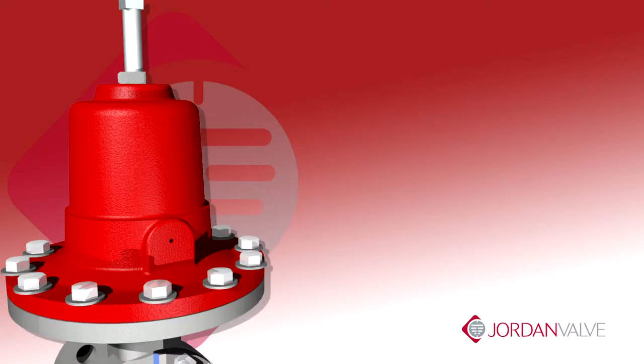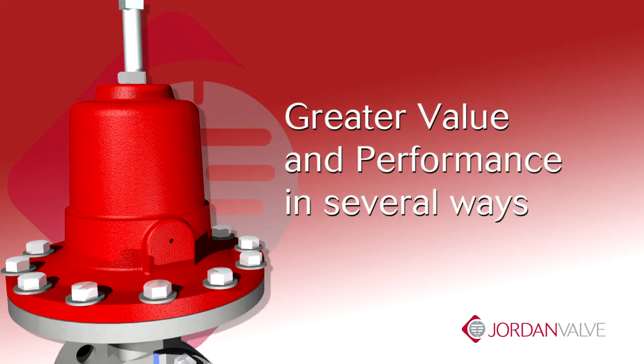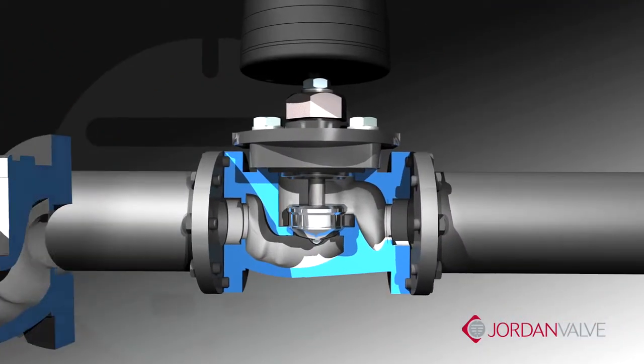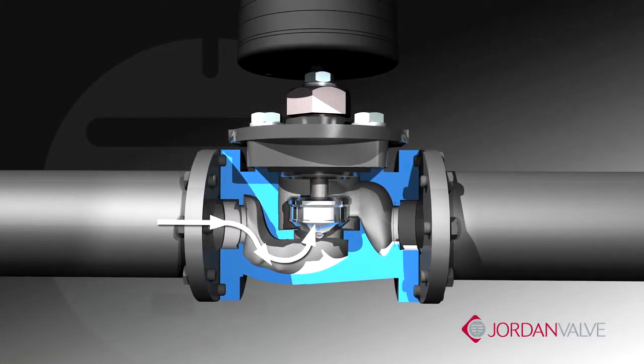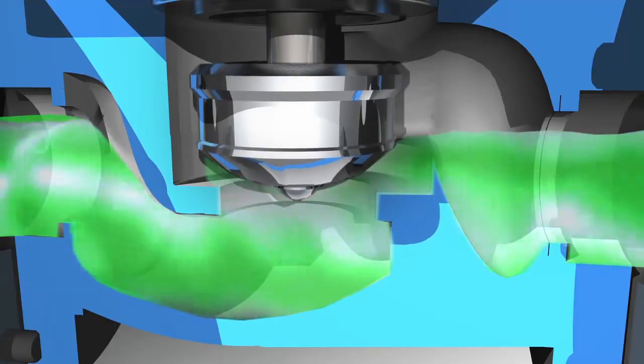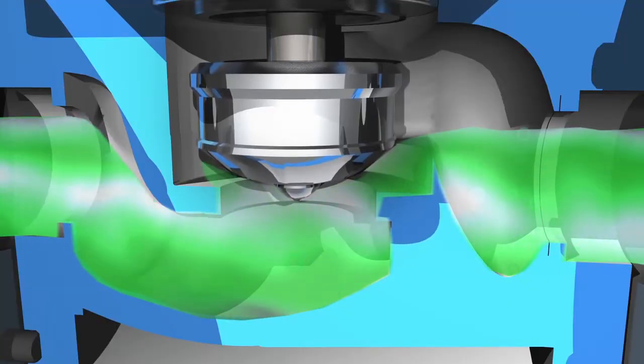In many ways, the sliding gate is superior to traditional trim designs and translates into greater value and improved performance. In a globe-style valve, product flow will change direction three times as it follows an S-path through the valve. This directly correlates to greater velocity, noise, and flow turbulence which produces more wear on the seating components.